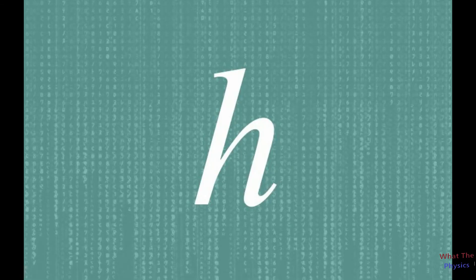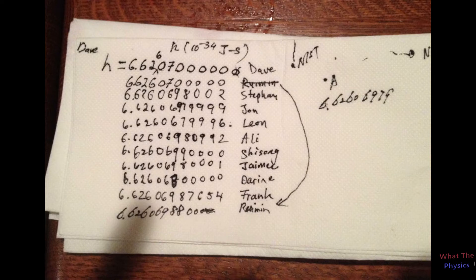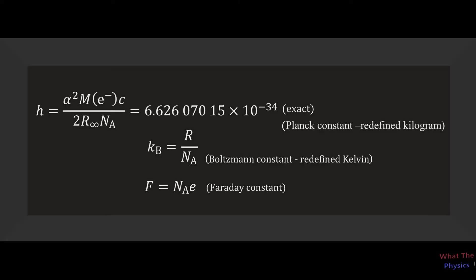But different scientists gave different values for Planck's constant. So to fix the value of Planck's constant, we used some precise experiments and superfine calculations. And the value of Planck's constant was fixed at 6.62607015 × 10^-34 kilogram meter squared per second.